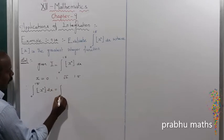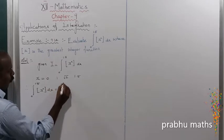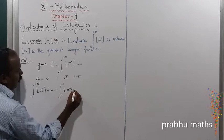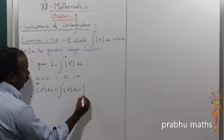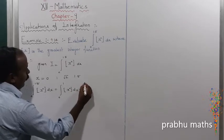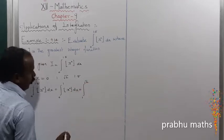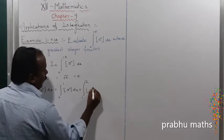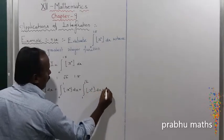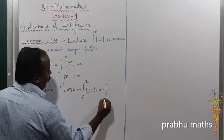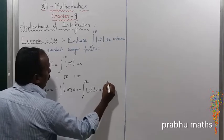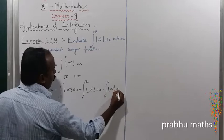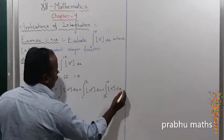That equals the integral from 0 to 1 of the greatest integer function of x squared dx, plus the integral from 1 to root 2 of the greatest integer function of x squared dx, plus the integral from root 2 to 1.5 of the greatest integer function of x squared dx.